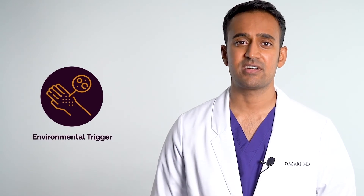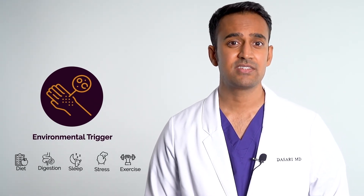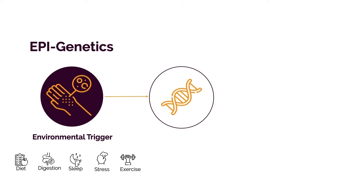According to genome surveys, there are dozens of genes associated with multiple sclerosis, but we only need to pay attention to what triggers them. These triggers are diet, digestion, sleep, stress, and exercise — the Big Five. These environmental triggers are collectively referred to as epigenetics. The prefix 'epi' denotes a higher position because epigenetics control genetics. In reality, it's epigenetics, not genetics, that really matters, because these are all things within our control that can directly impact how much inflammation we have in our body.